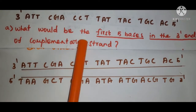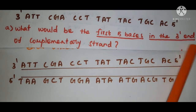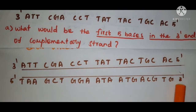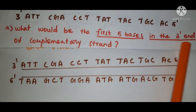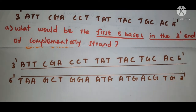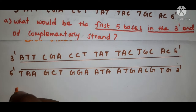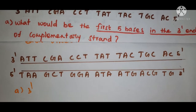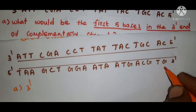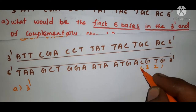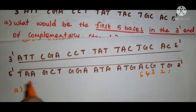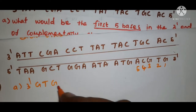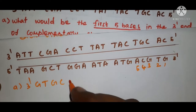The first question asks what would be the first 5 bases at the 3' end of the complementary strand. This is the given DNA strand and this is the complementary strand. Reading the first 5 bases at the 3' end, the answer is: 3' — G, T, G, C, A.